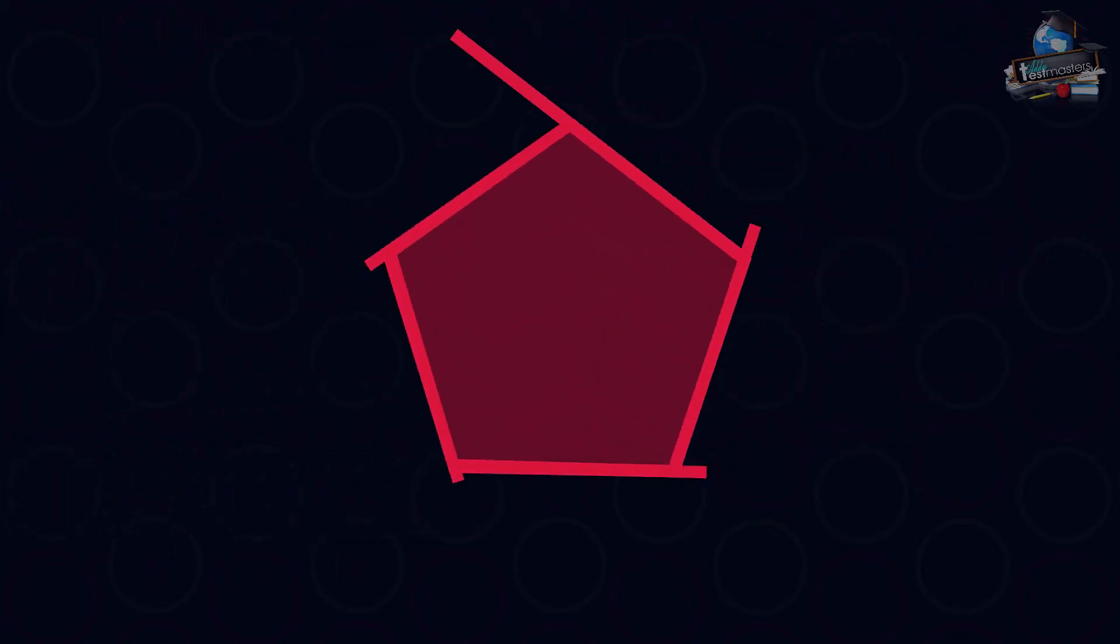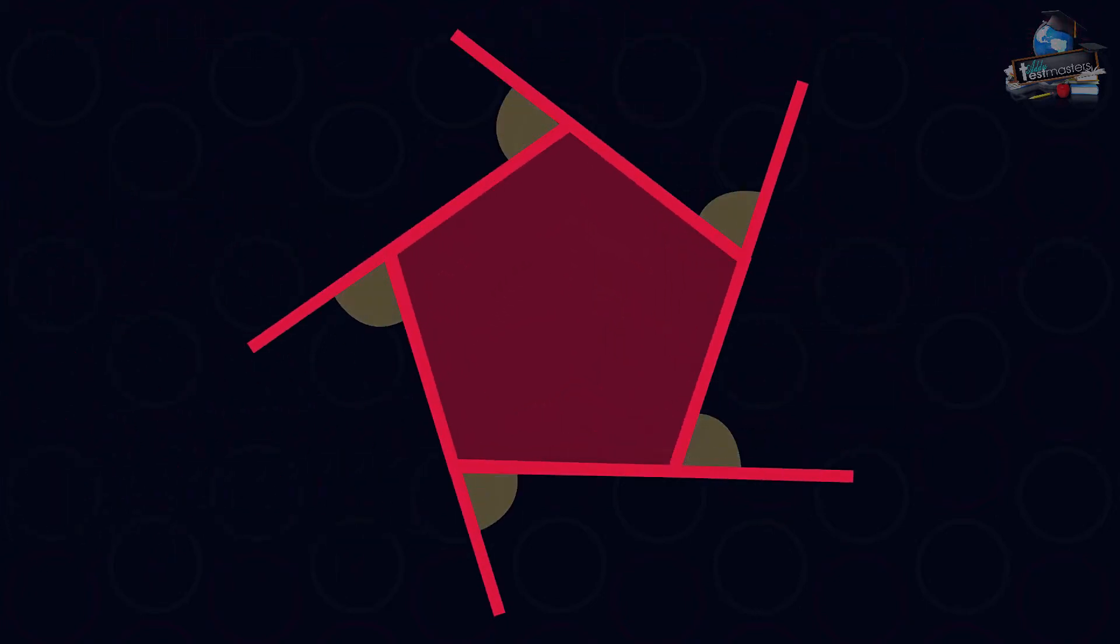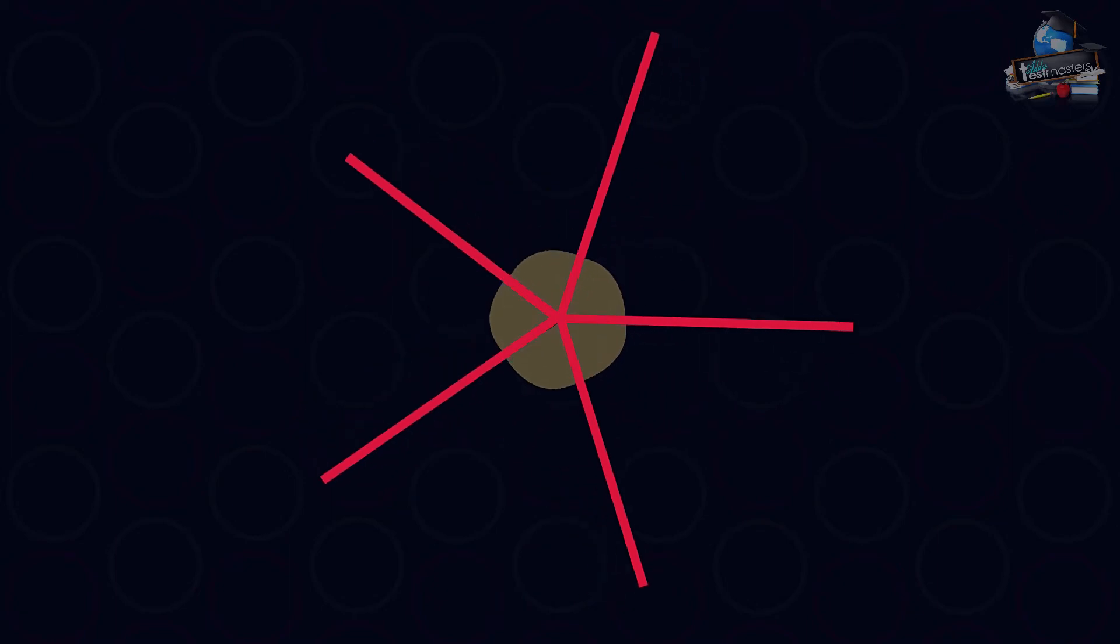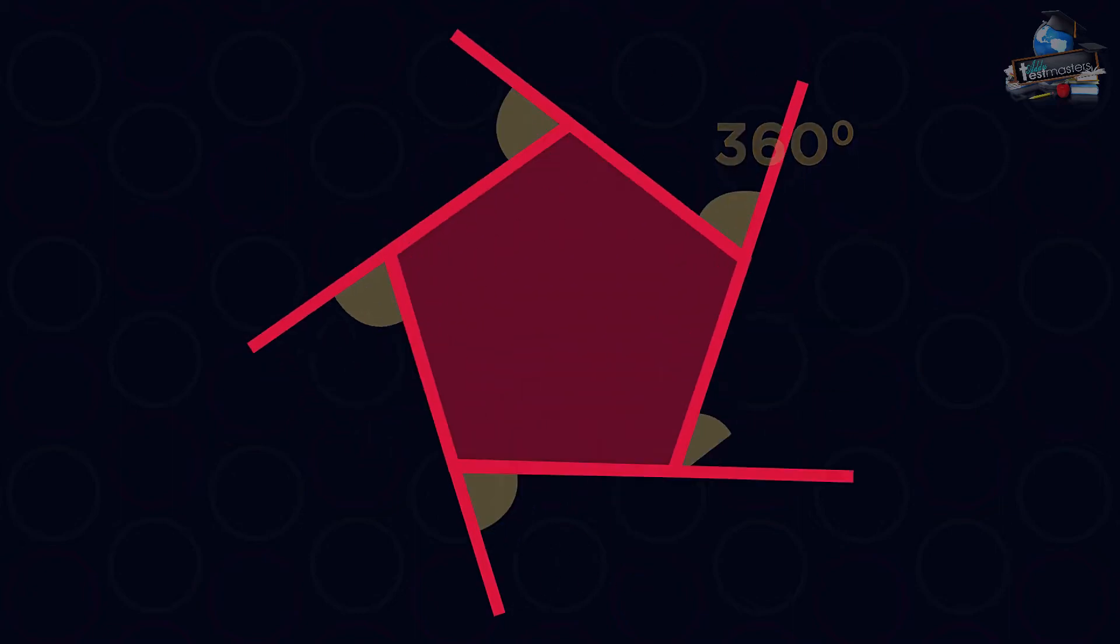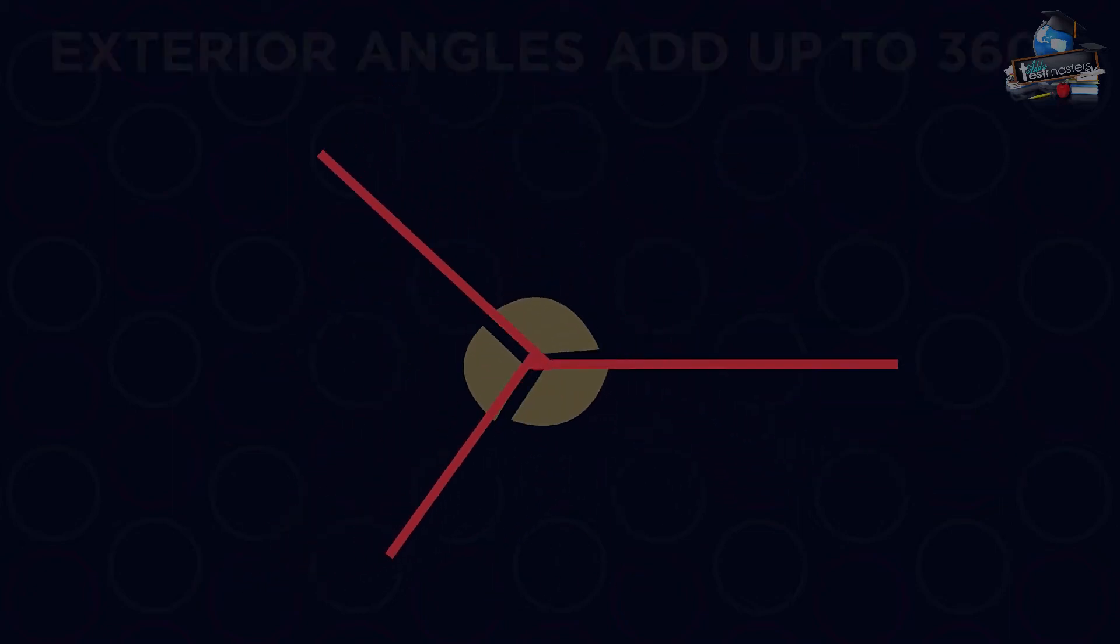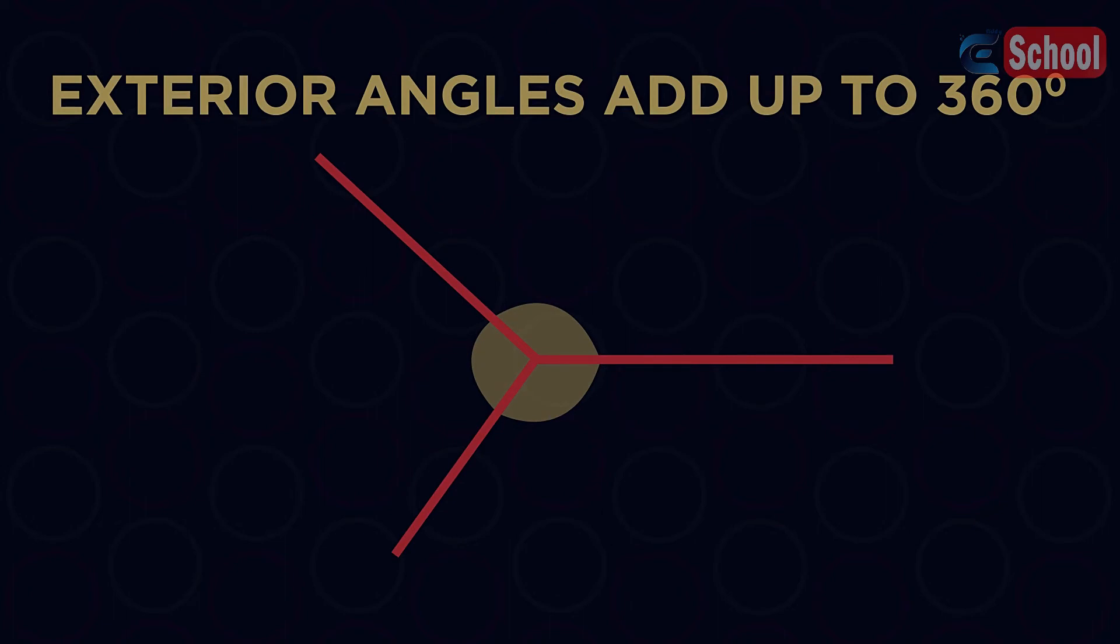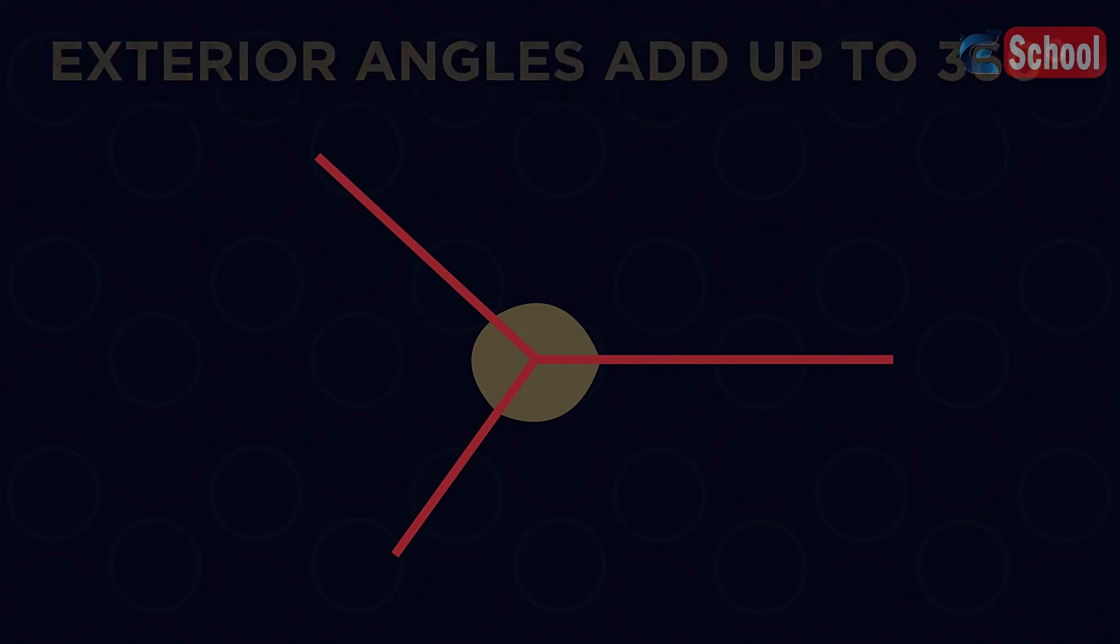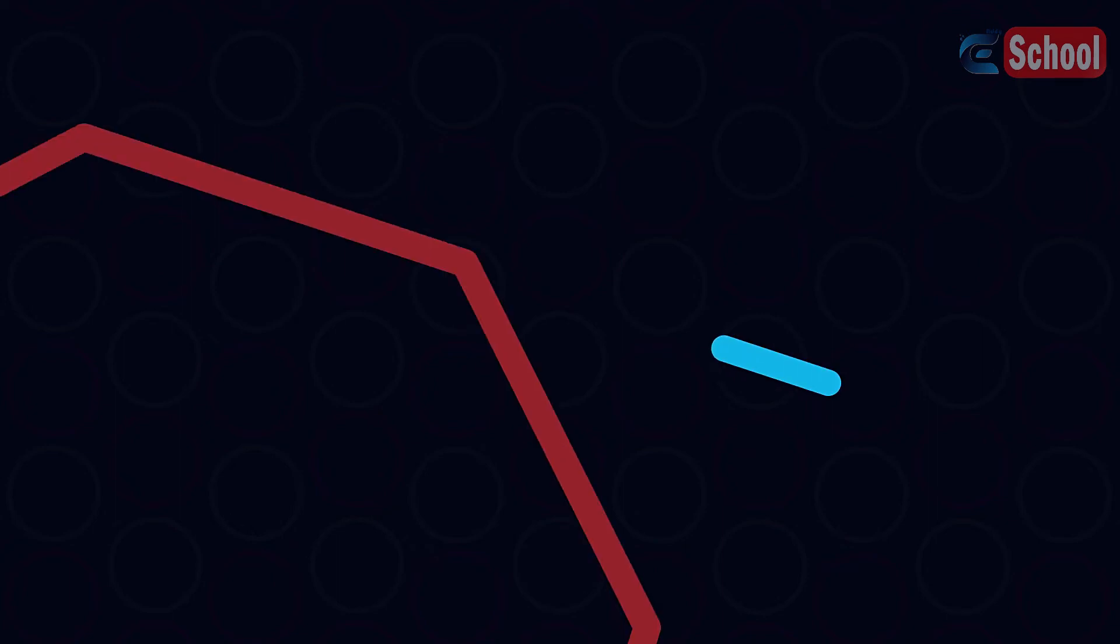If we take all of the exterior angles and pull them together, they will always make 360 degrees. This is true for any polygon. The exterior angles will always add up to 360 degrees. This is actually really useful.